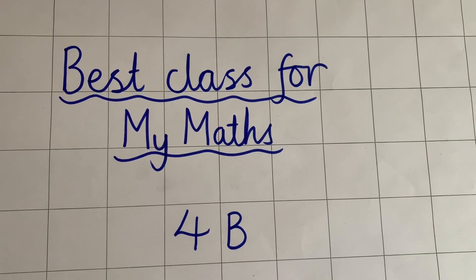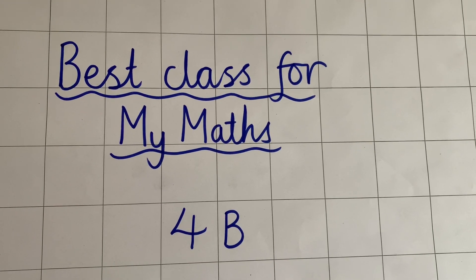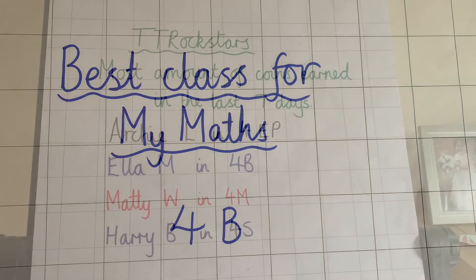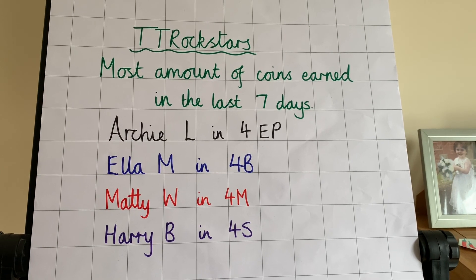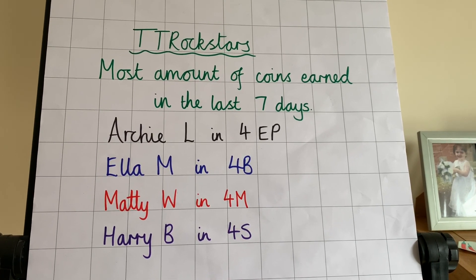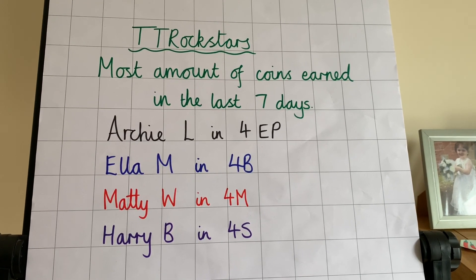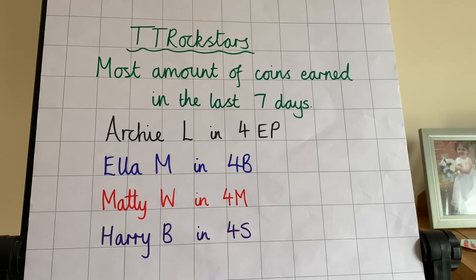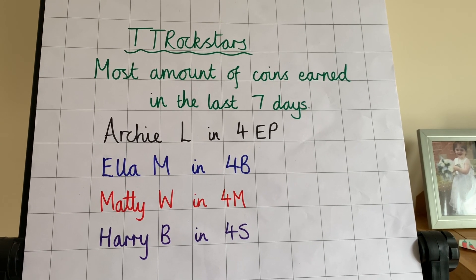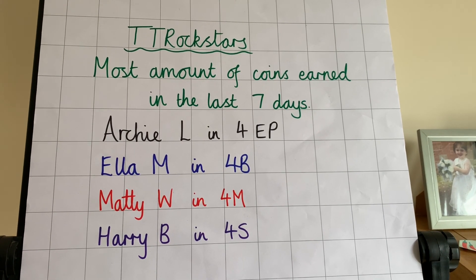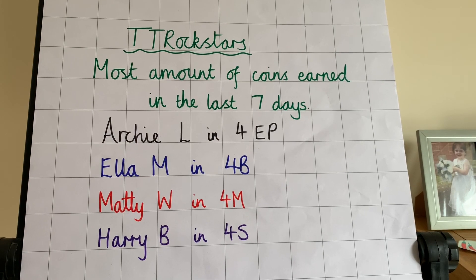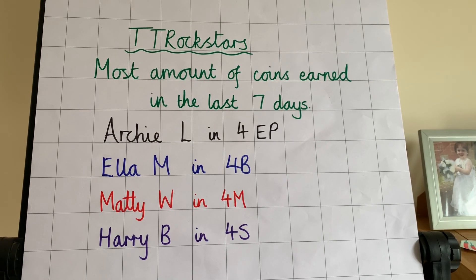Well done to 4B for being the best class for maths this week — that's fantastic 4B. Here are the TT Rockstars winners for most coins earned in the last 7 days: Archie L in 4EP, Ella M in 4B, Matty W in 4M, and Harry B in 4S. Keep up the good work. Well done on your work on rounding this week — don't forget to log into MyMaths and have a go at the rounding activities. Keep up the good work!